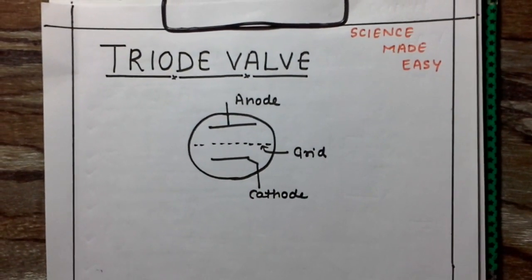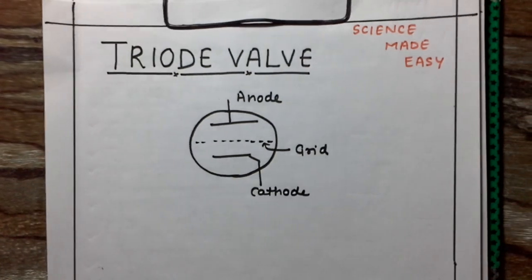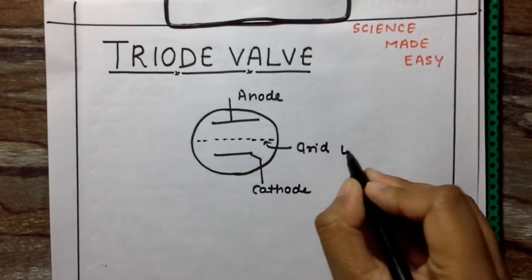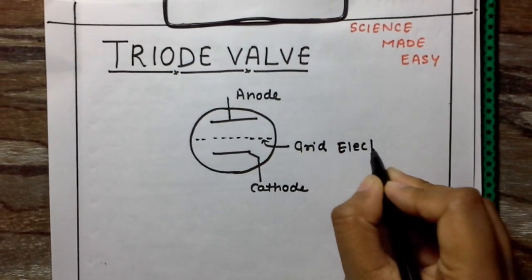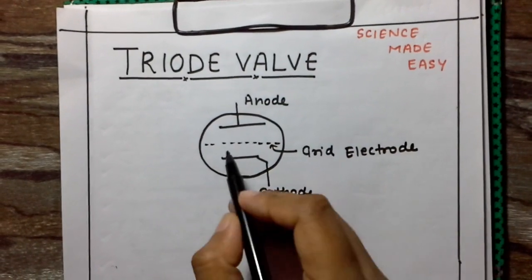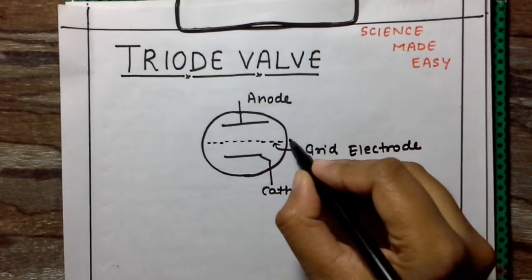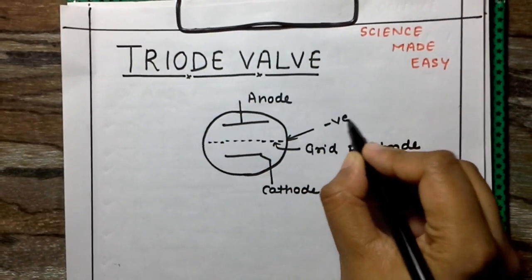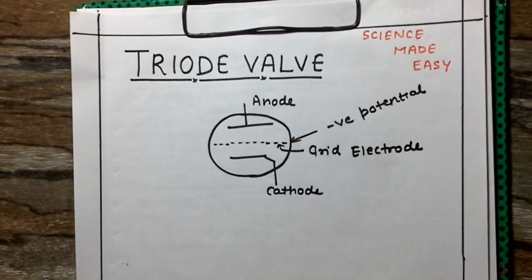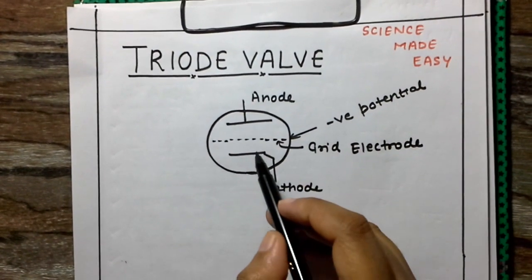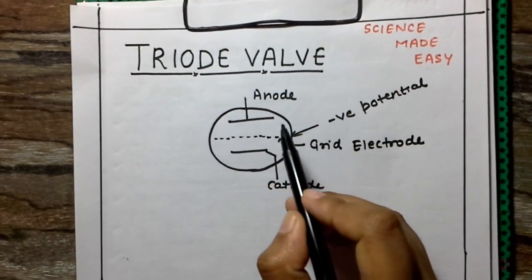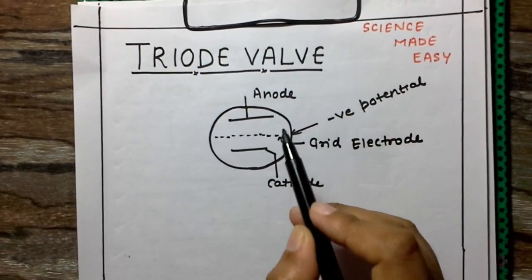In order to control the plate current, we have introduced a third electrode known as the grid electrode. To control the plate current, we give the grid a negative potential, such that when electrons are emitted by the cathode, they experience a repulsion force from the grid. As a result, fewer electrons reach the anode and the plate current decreases.